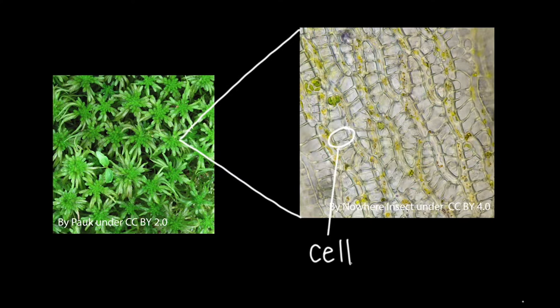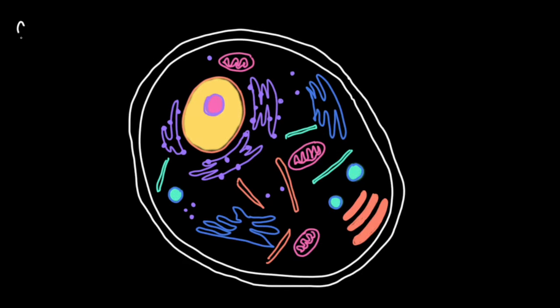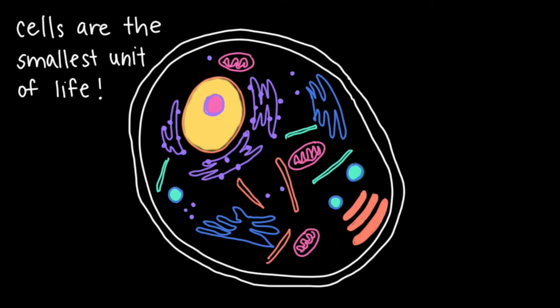Each cell contains a flurry of activity as it works to carry out the functions that keep the organism alive. In fact, cells are the smallest unit that can carry out all the tasks necessary for life.